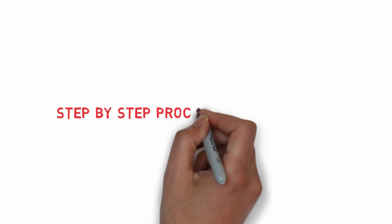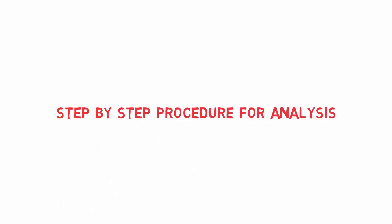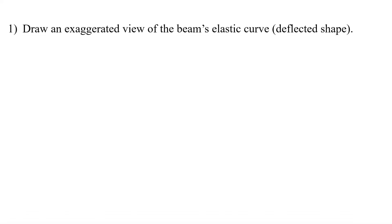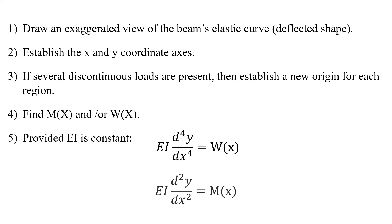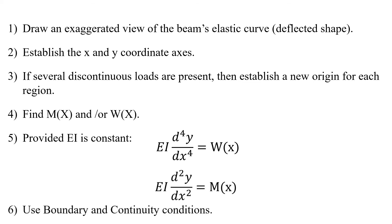The deflection and slope of a beam can be calculated using the integration method by the following step-by-step procedure: (1) Draw an exaggerated view of the beam's elastic curve. (2) Establish x and y-coordinate axes, with the x-axis parallel to the undeflected beam. (3) If several discontinuous loads are present, establish a new origin for each region. (4) Express the loading w and/or internal moment M as a function of x. (5) Provided EI is constant, apply either the load differential equation w(x), requiring 4 integrations, or the moment equation M(x), requiring 2 integrations. (6) Use boundary and continuity conditions to determine constants of integration.